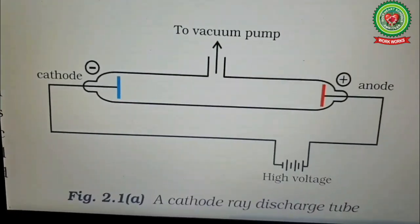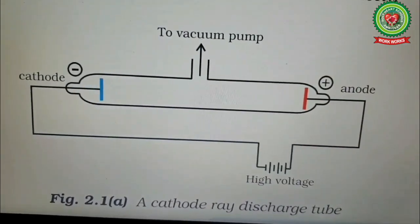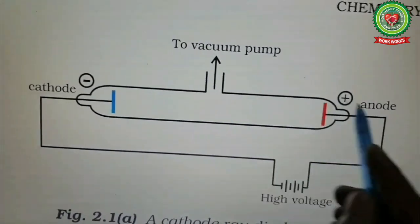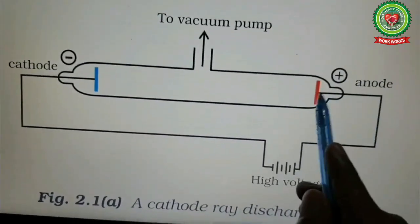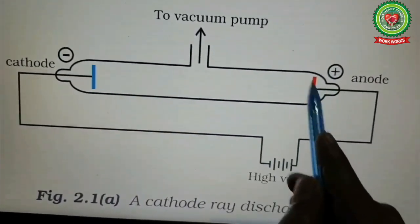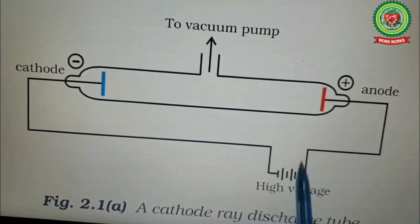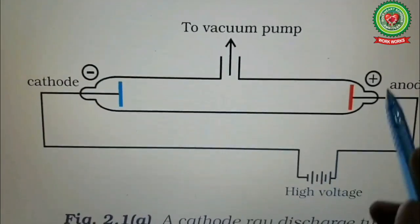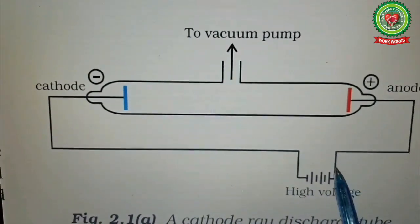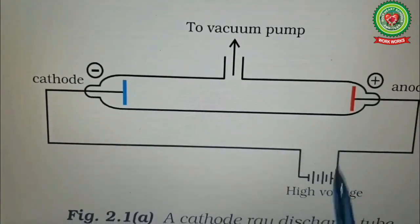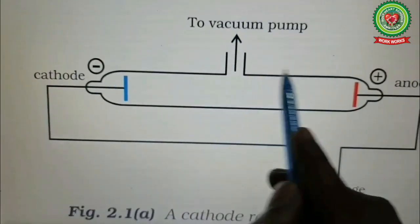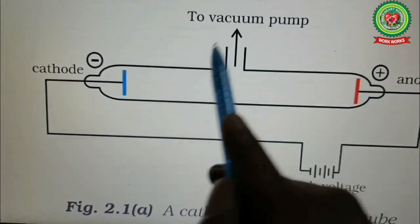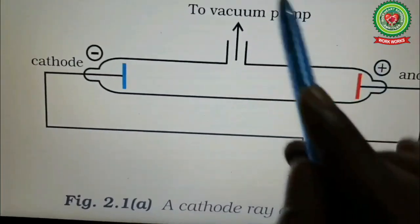After Dalton's atomic theory, let's move to the cathode ray experiment. In 1859, Julius Plücker started the study of conduction of electricity through gases at low pressure in a discharge tube. This hard glass discharge tube was fitted with two electrical plates connected to a high voltage battery. The negative terminal was known as the cathode and the positive terminal as the anode. A vacuum pump regulated the pressure inside.